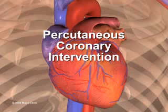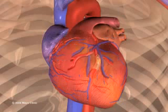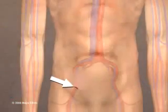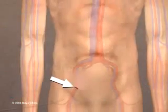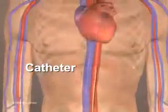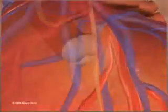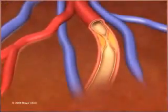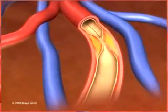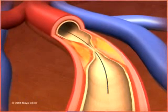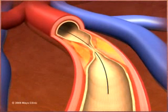Percutaneous coronary intervention, also known as coronary angioplasty, opens narrowed coronary arteries. A small, hollow tube called a catheter is inserted into an artery in the groin or arm and threaded to the affected artery. A thin, flexible metal wire is then advanced through this tube and past the site of blockage in the artery.